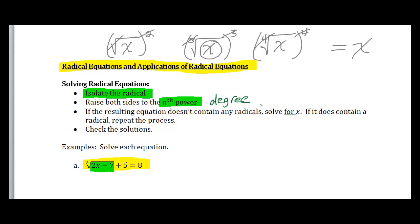Next, if the resulting equation doesn't contain any radicals, we have a regular equation with just X and we can solve it normally — it might be linear or quadratic. However, if it still contains a radical, we repeat the process: isolate the radical again and raise both sides to the nth power. At the end, we check our solutions, because when we square both sides, we can introduce extraneous solutions that don't actually work in the original problem.